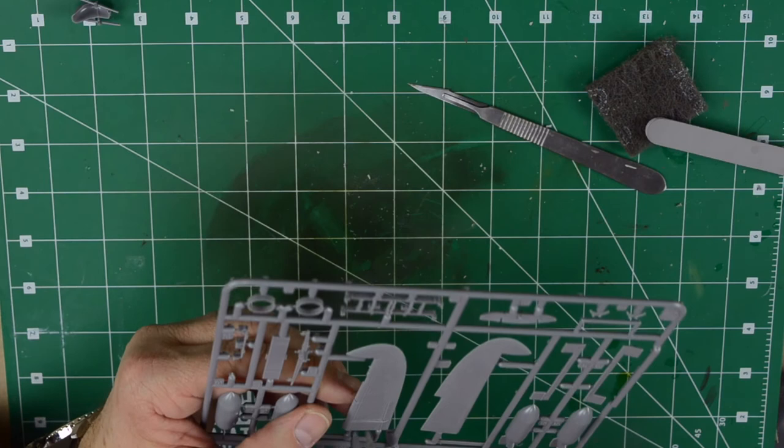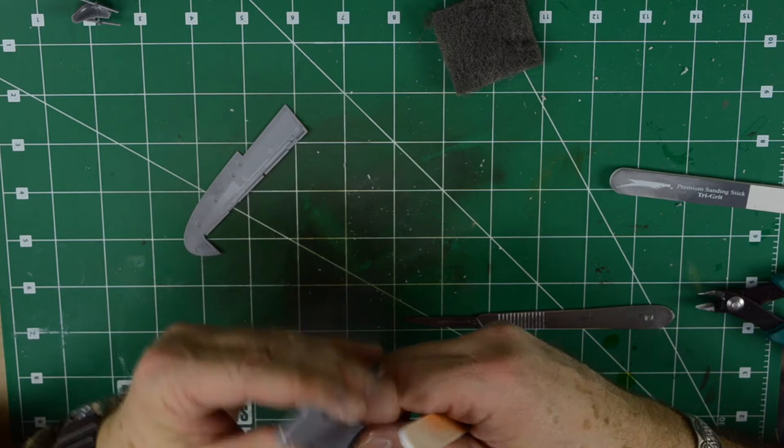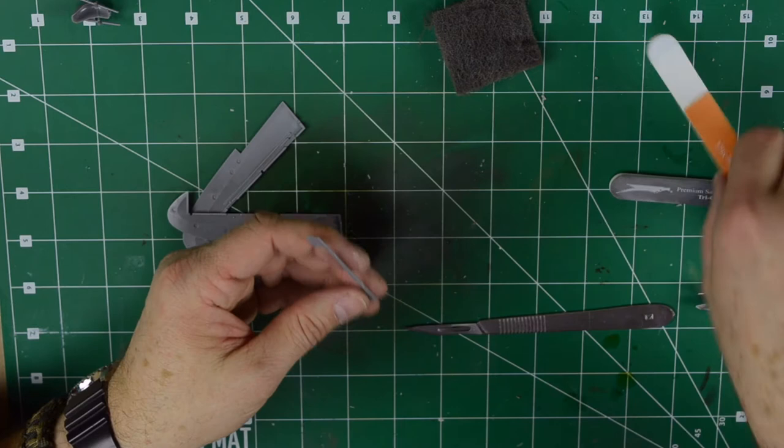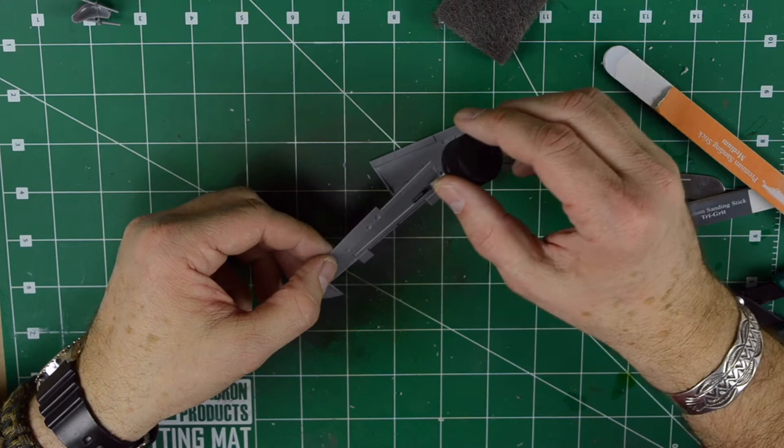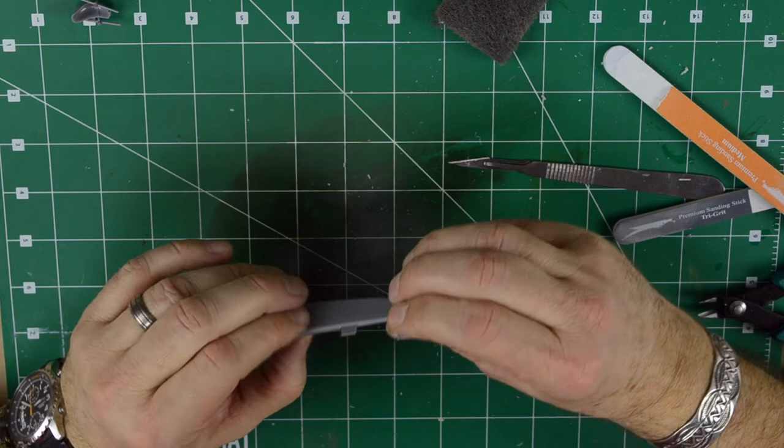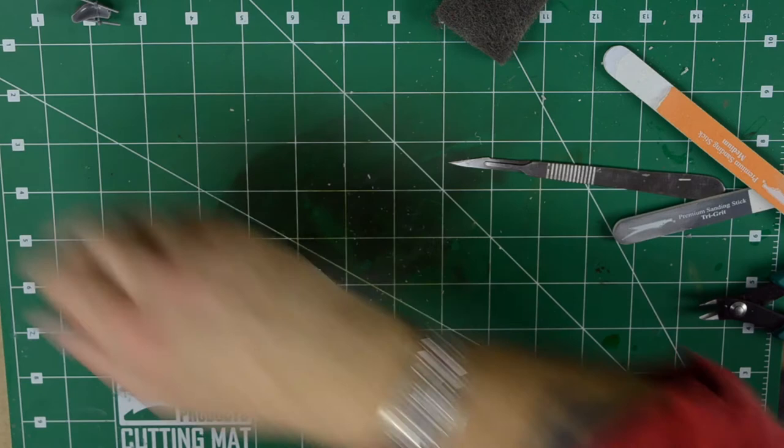The next step is the ailerons. Okay, now we can apply the same like we did with the actual stabilizers. Just tackle it with some plastic weld and press the top on it. And apply, just for all safety, a bead of plastic weld on the joints. This is one. We do exactly the same for the other side.